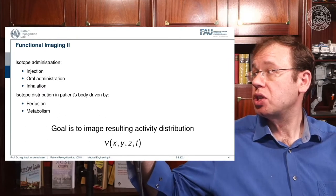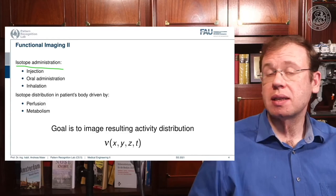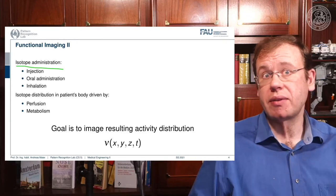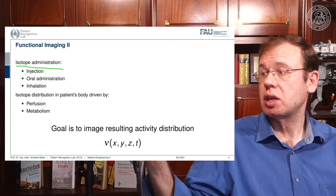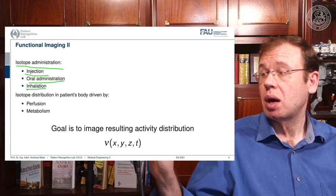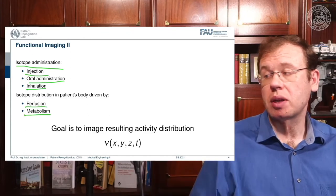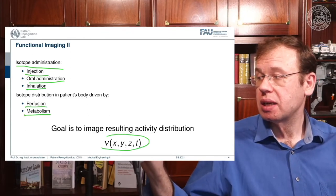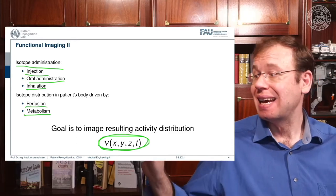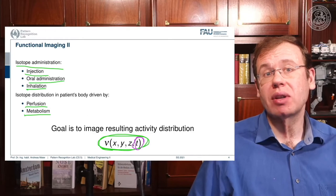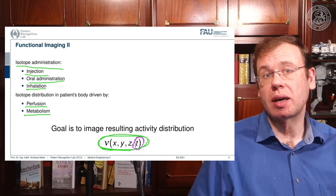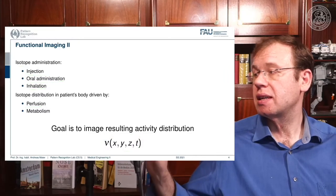Functional imaging uses some isotope inserted into the body — it can be injected, swallowed, or breathed: injection, oral, or inhalation. The isotope's distribution moves through the body either by perfusion or metabolism. The goal of nuclear imaging is to reconstruct the activity distribution of the tracer in three dimensions and in time, giving us four-dimensional images. We want to figure out where the distribution goes and how it is processed inside the body to investigate metabolism.